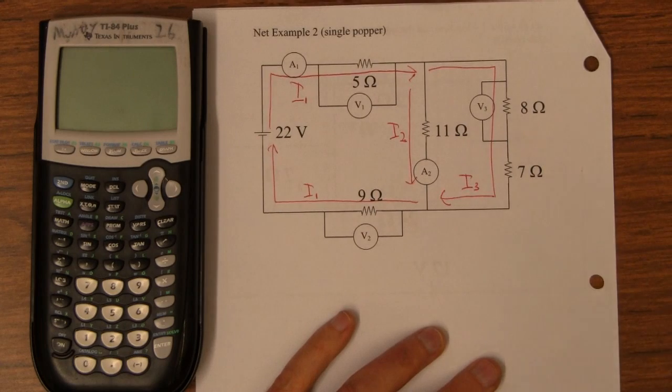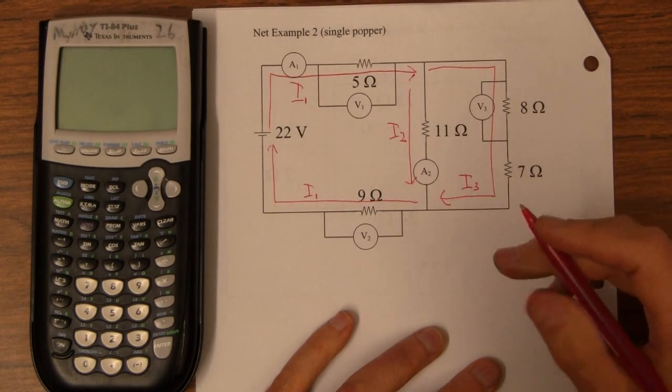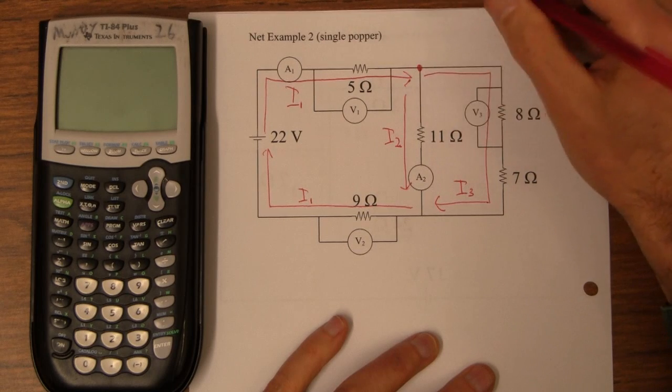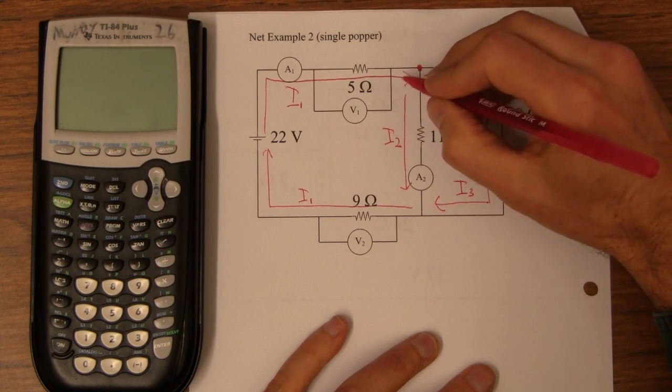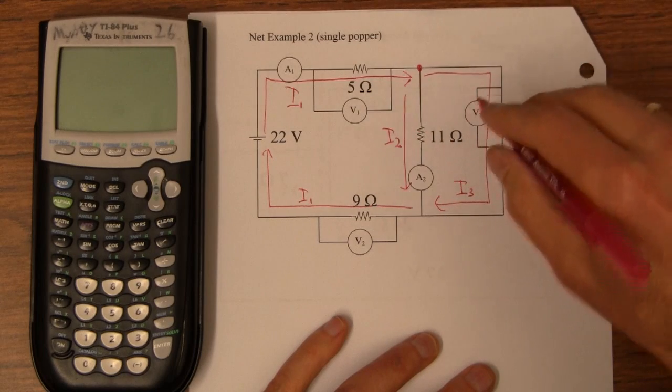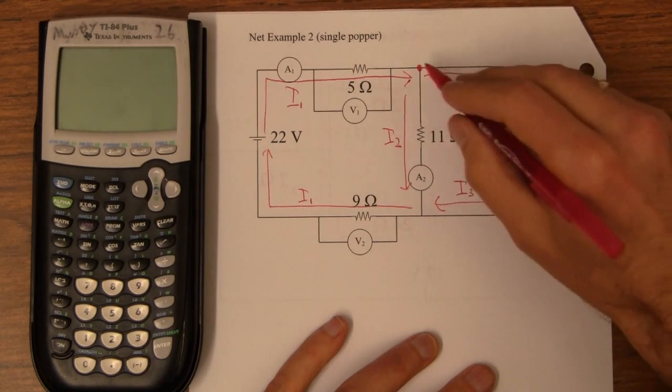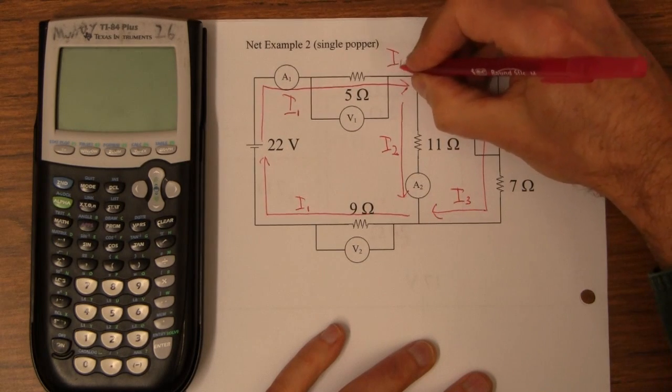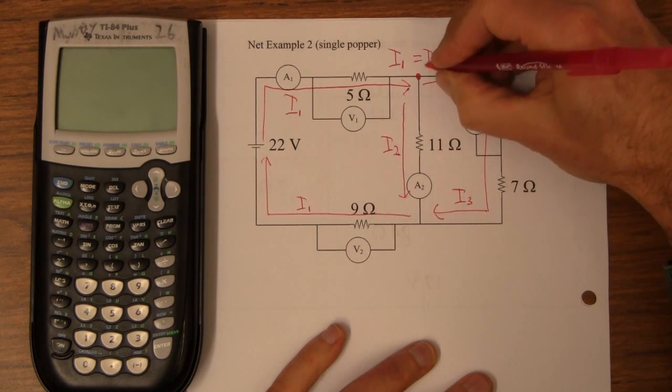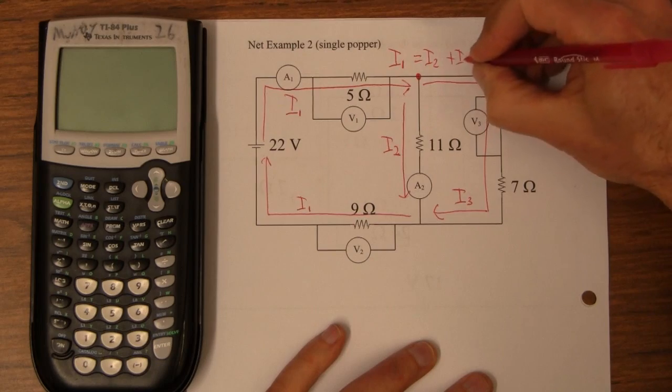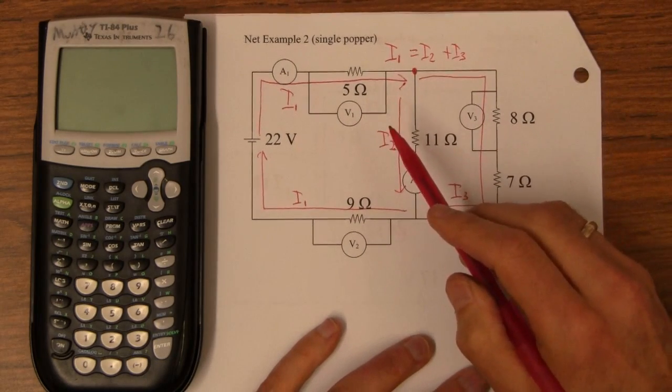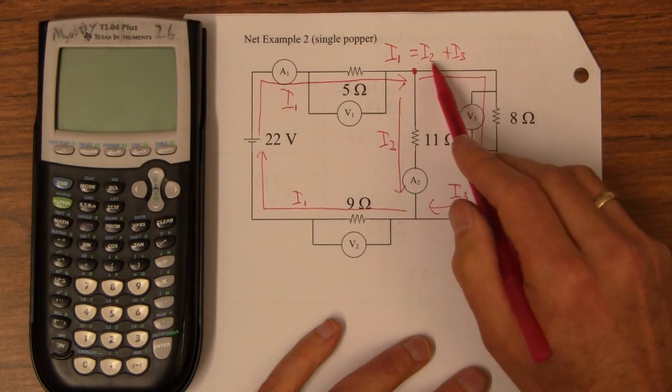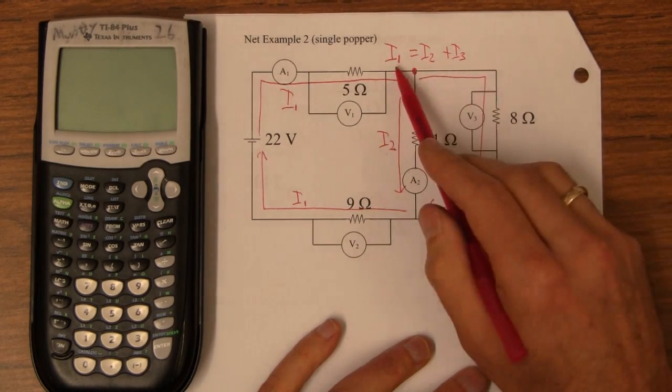Now, the first rule, the first of Kirchhoff's rules, is called the junction rule. If you pick a particular junction like this, the sum of the currents flowing in equals the sum of the currents flowing out. So, for that junction right there, we get the formula I1 equals I2 plus I3. In other words, this is conservation of charge. I1 splits into two currents, and the currents it splits into add up to the current.